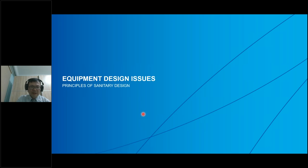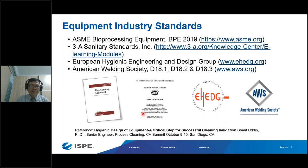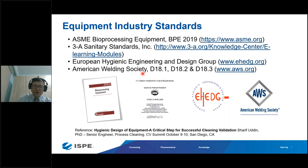Next are the principles of sanitary design. In the equipment industry, there are three or four standards for sanitary design: the ASME Bioprocessing Equipment (BPE) standard, the 3-A Sanitary Design Standards, the European Hygienic Engineering and Design Group (EHEDG), and the American Welding Society. These standards provide good reference guidance on how to design equipment to be sanitary and easily cleanable.